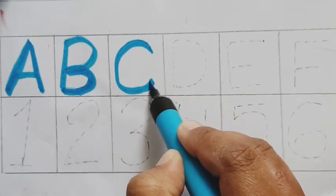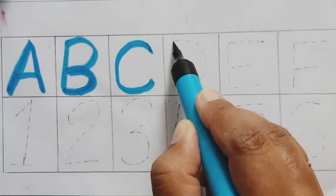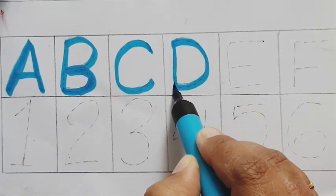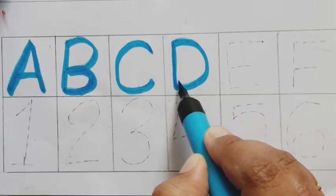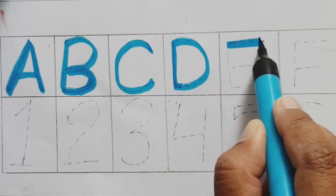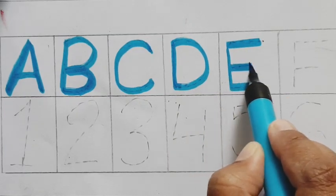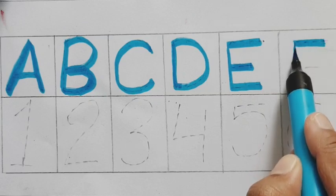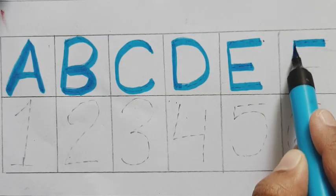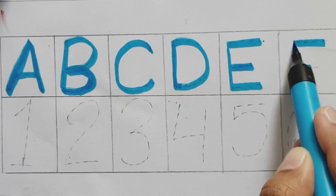C for Cat, D for Duck, E for Elephant, F for Fish.